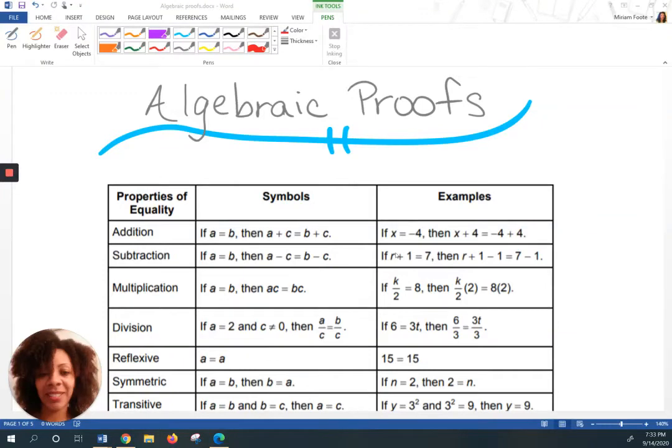Let's talk algebraic proofs. A proof is simply an argument that's going to show that a conclusion is true. So when we're talking about that, we need reasons. Why is this true? So we have something called properties of equality.